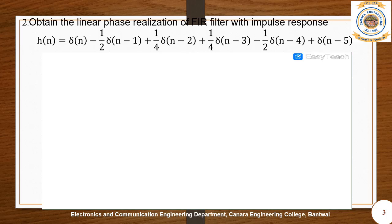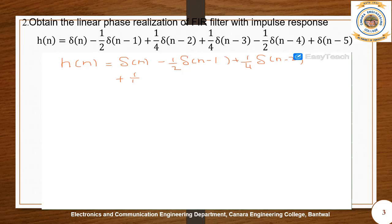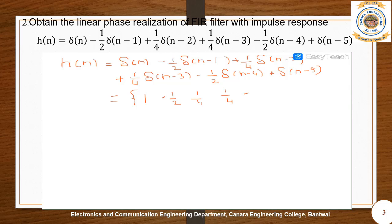Let us begin with the second problem of tutorial number 11. We need to realize the given impulse response h(n) = δ(n) - (1/2)δ(n-1) + (1/4)δ(n-2) + (1/4)δ(n-3) - (1/2)δ(n-4) + δ(n-5). Linear phase realization of this impulse response is required. The coefficients are: 1, -1/2, 1/4, 1/4, -1/2, 1.